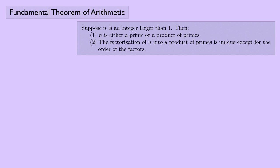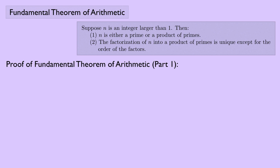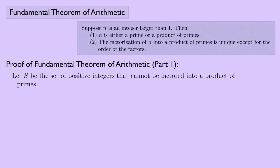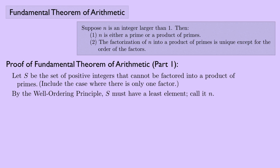So let's look at a proof. We're going to look at part one first — the part that says n is either a prime or a product of primes. Let s be the set of positive integers that cannot be factored into a product of primes. We're going to work towards a contradiction, including the case where there is only one factor. By the well-ordering principle, s has to have a least element.